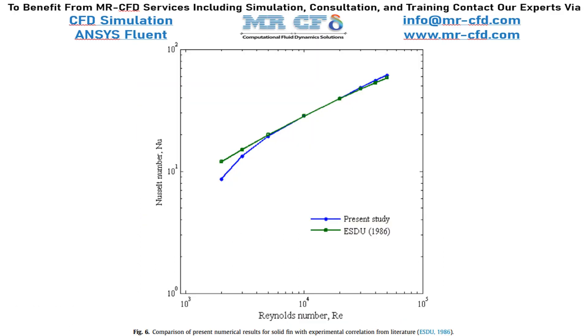In this slide, you can see that we have extracted Figure 6 of the paper, which shows the Nusselt number data for different Reynolds numbers, and we are going to validate this graph.